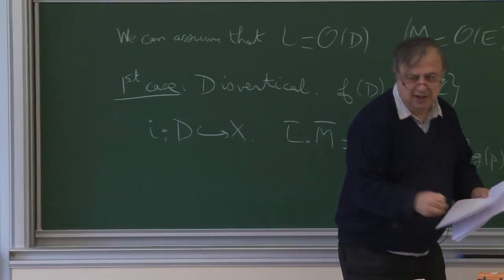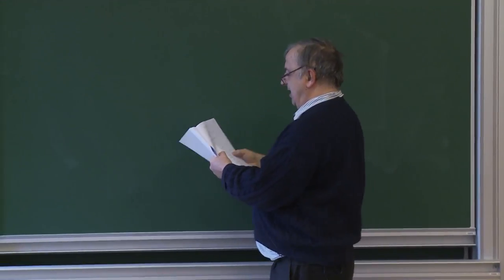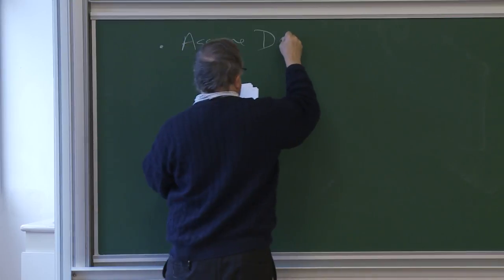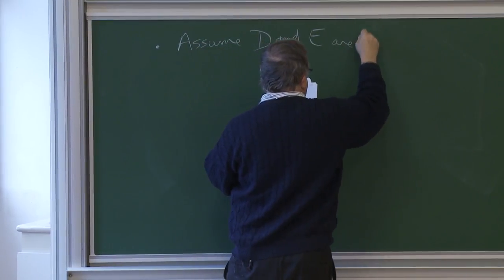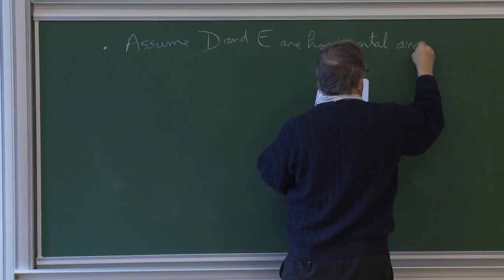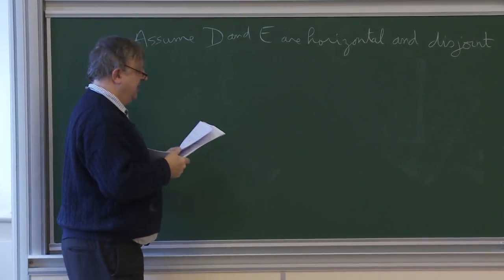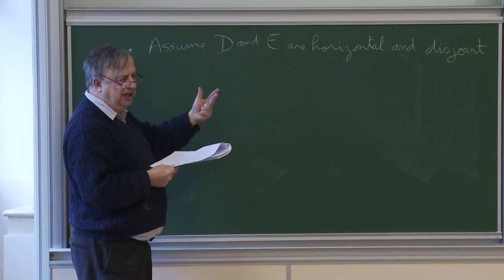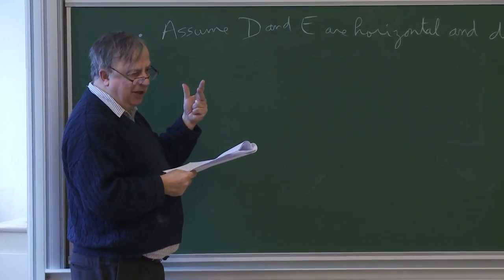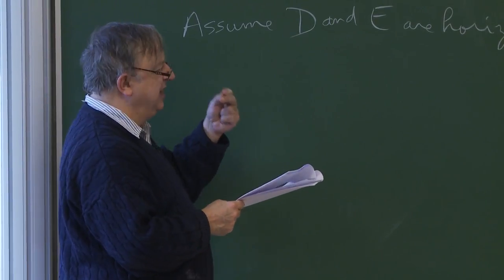There is no role for the metric in the intersection as soon as one of them is vertical. Now assume D and E are horizontal and disjoint. You could have the situation where D meets E, but then by changing the divisor representing M we go to another divisor which meets properly with D. So to give a definition we can assume that D and E are disjoint.